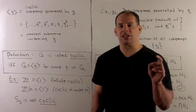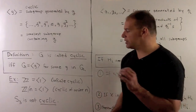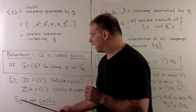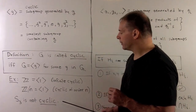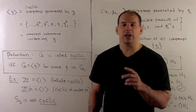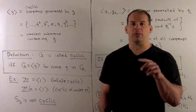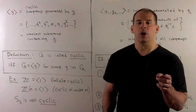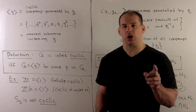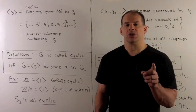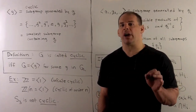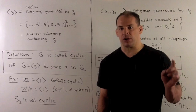For an example that's not cyclic, consider the symmetric group on three elements S3. Any element of order 2 will never generate an element of order 3, and vice versa. So none of the elements can generate all of S3, meaning S3 is not cyclic.